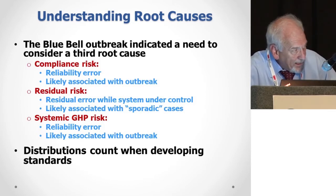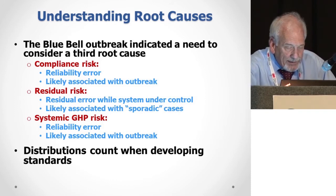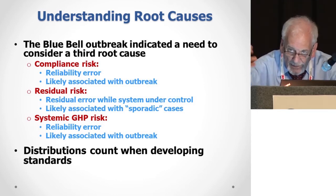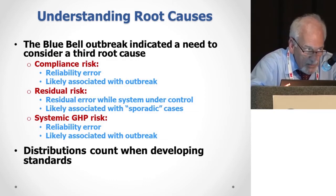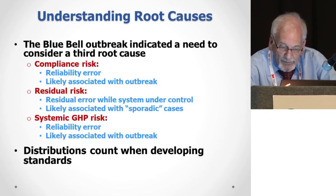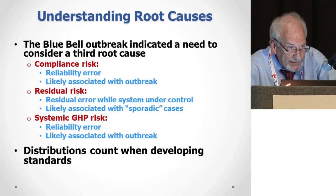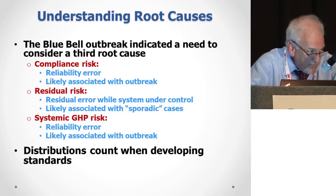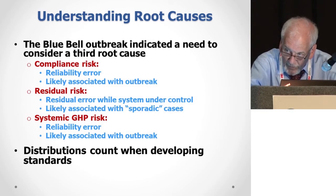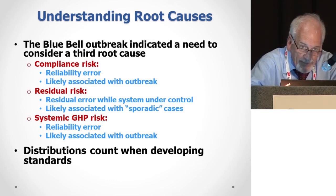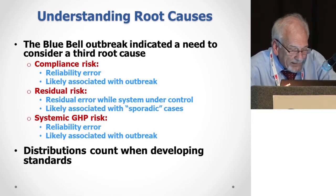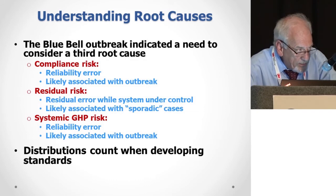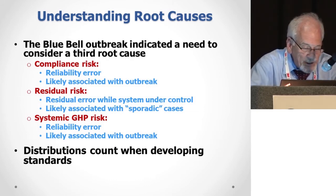The Blue Bell episode established a third type of risk. You have compliance risk — a reliability error likely associated with outbreaks. You have residual risk — the error when the system is working under control, likely contributing to sporadic cases, and if you have a resident organism picked up by whole genome sequencing, it could alternatively be classified as an outbreak. And finally you have a systemic GHP risk — also a reliability error likely associated with an outbreak. What is important about systemic GHP risk is that the distribution counts.